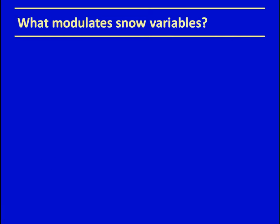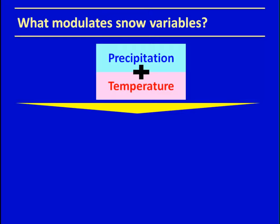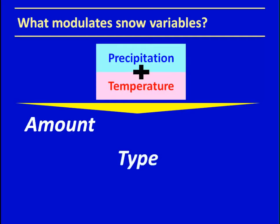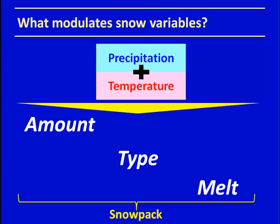Snowpack has two different measurements: its height in terms of snow water equivalent, and the surface area measurement — the snow-covered area, or the surface area of land covered by snow. Both precipitation and temperature combine to modulate snow by three main processes: the amount of precipitation that falls during winter, the type — snow collects if it's below freezing, and falls as rain if above — and melt. Amount and type modulate snowfall, while all three processes modulate snowpack, since snowpack is the only one affected by snowmelt of what's on the ground.